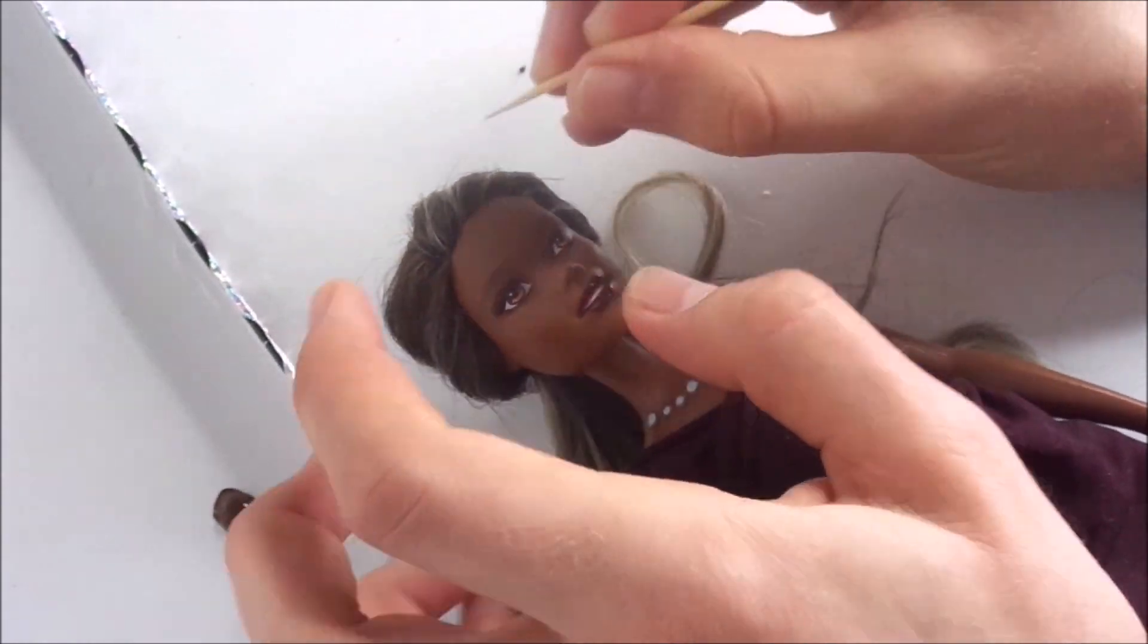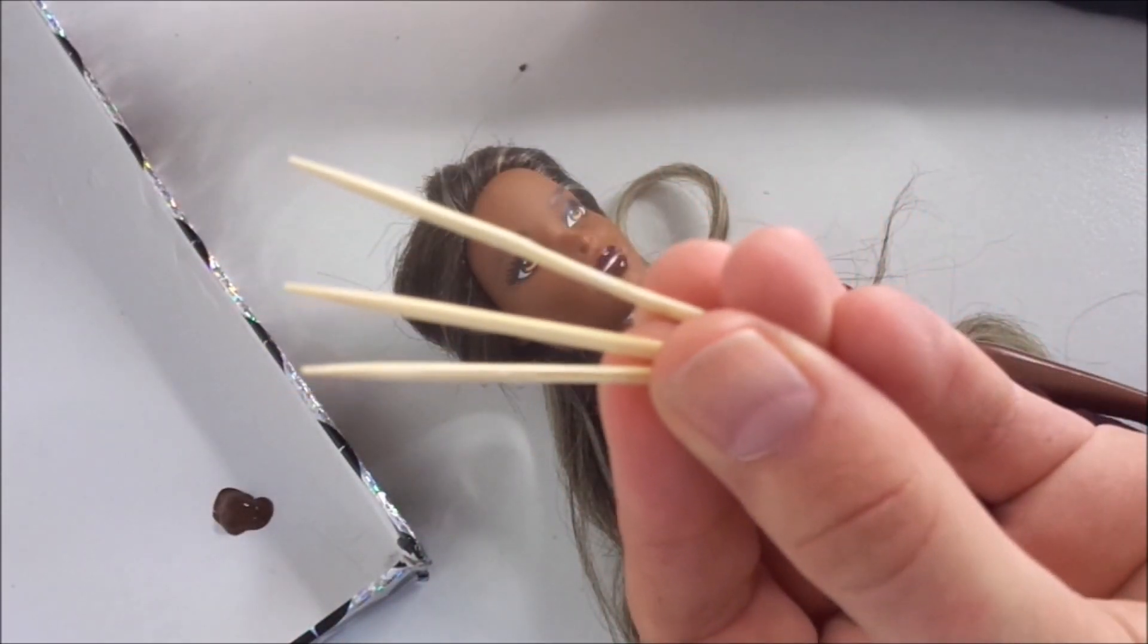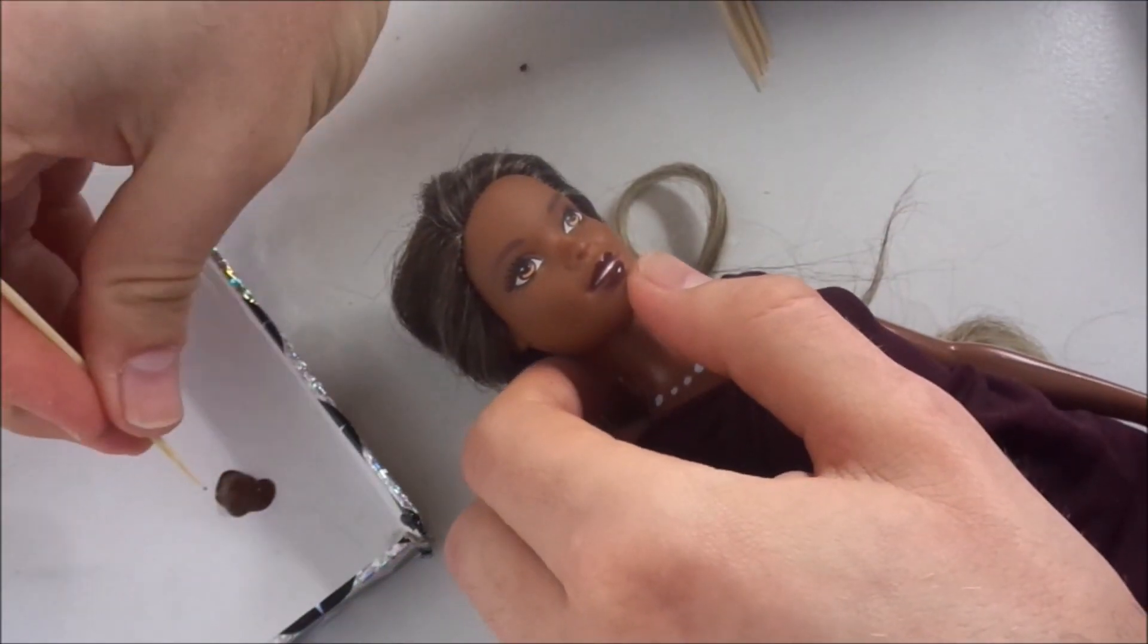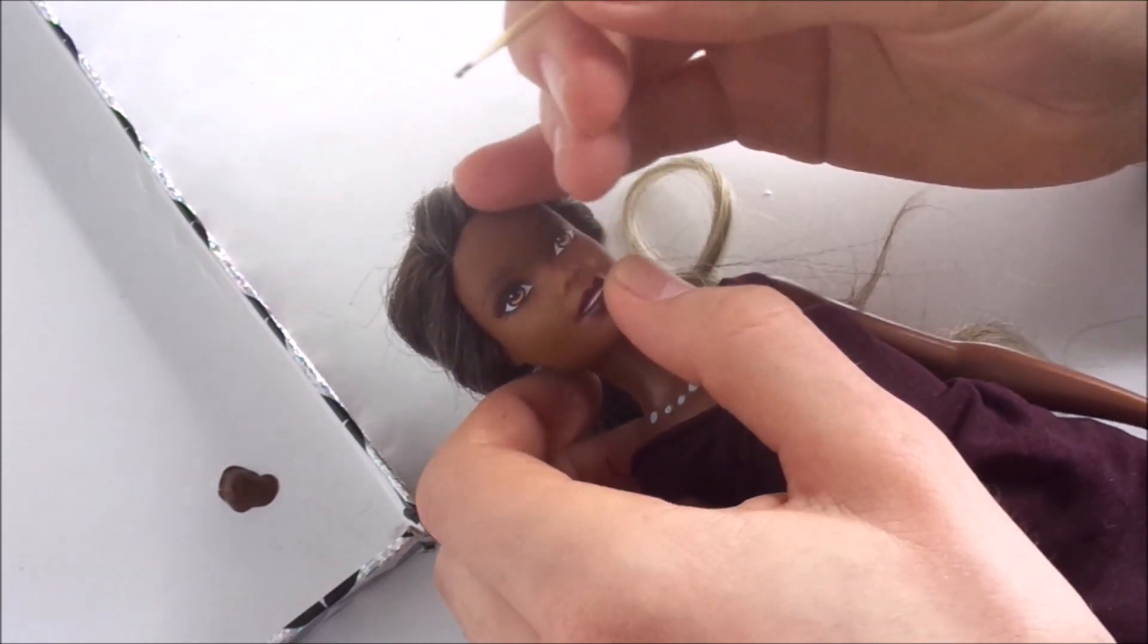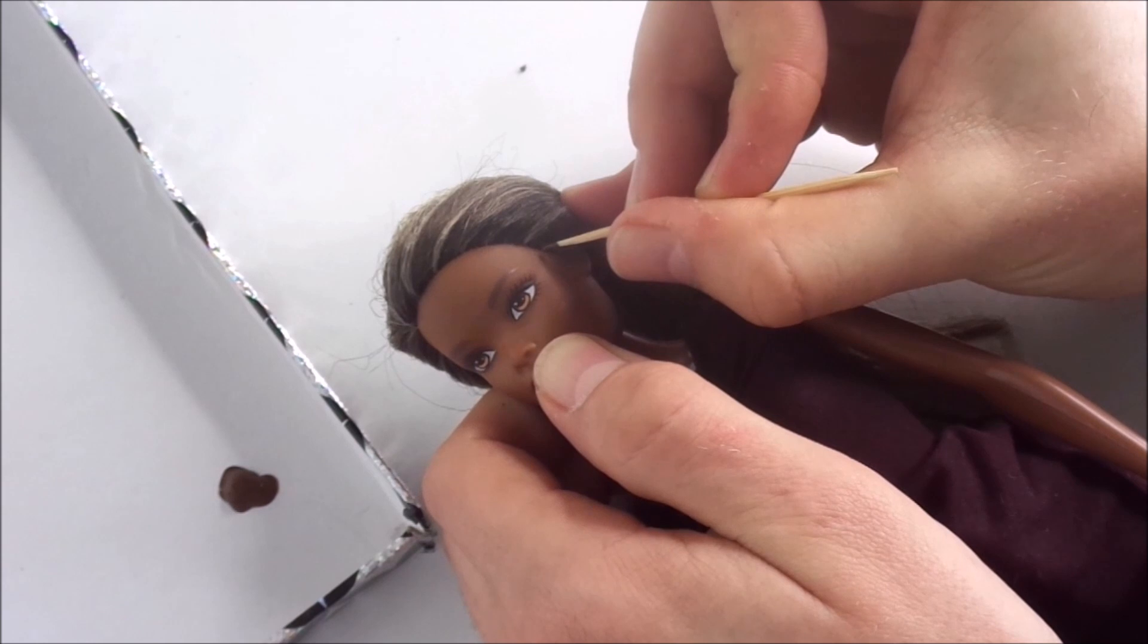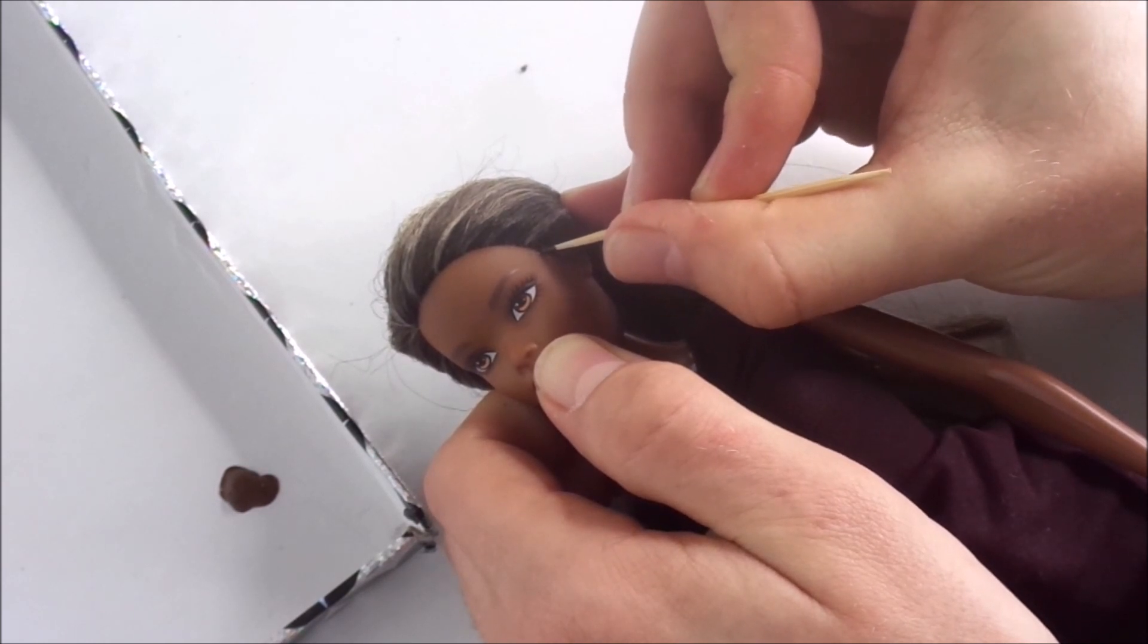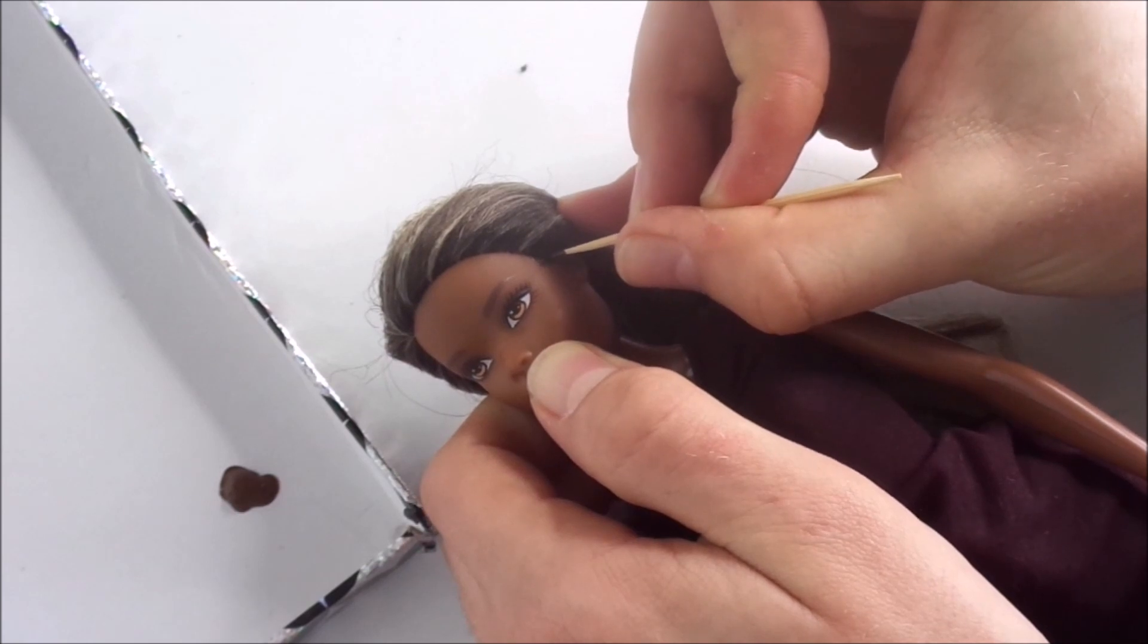To paint the baby hairs on I use several toothpicks. I personally like to start down by the ear to give me the ability to make some mistakes because these baby hairs won't show as much as the ones that are closer to the part. I take my first toothpick and paint on a small swoop like this.